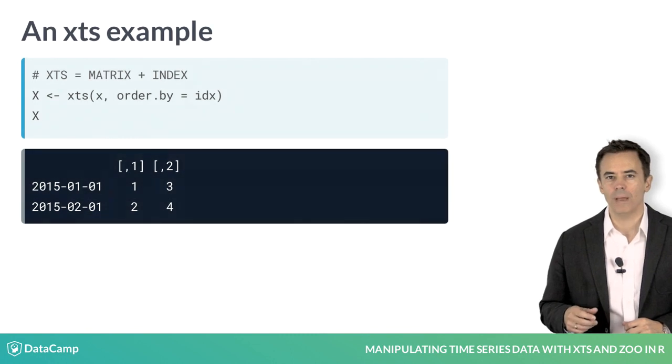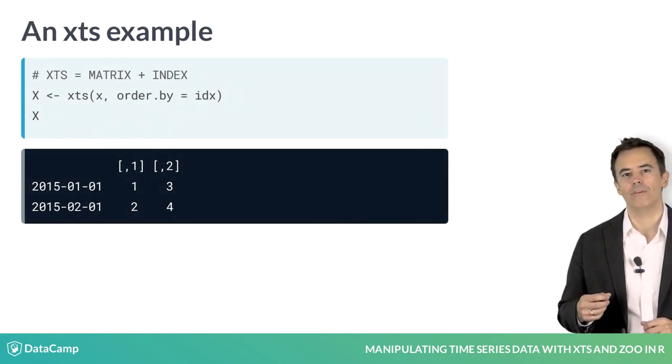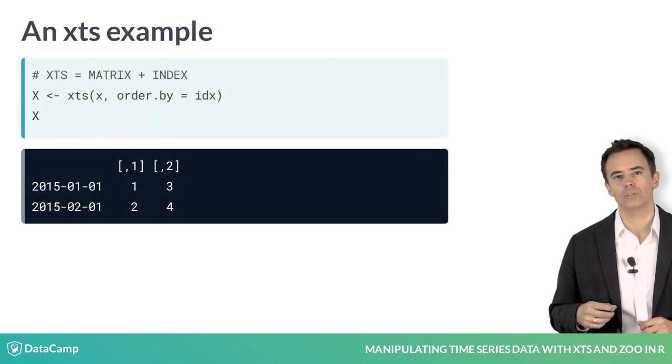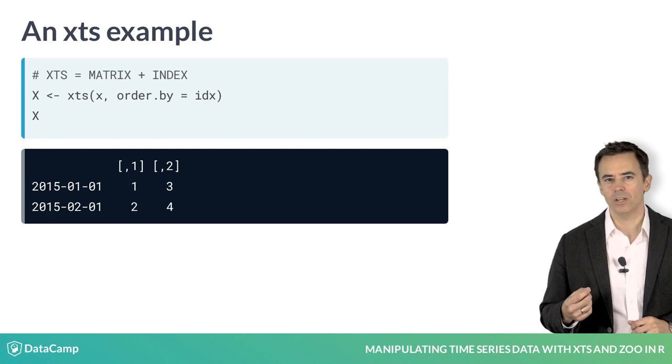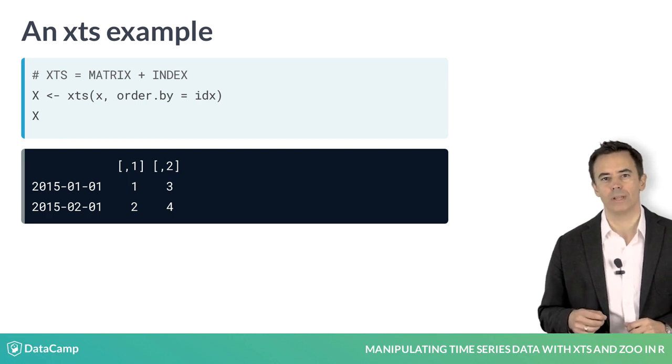Looking back to the example, you can see that we now have a matrix of values with dates on the left. They may look like row names, but remember, it's really our index.